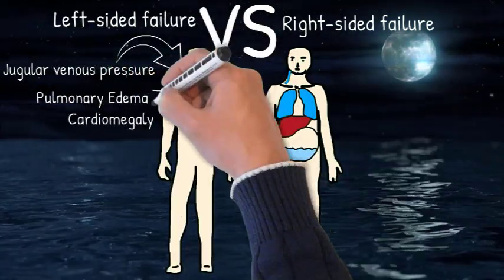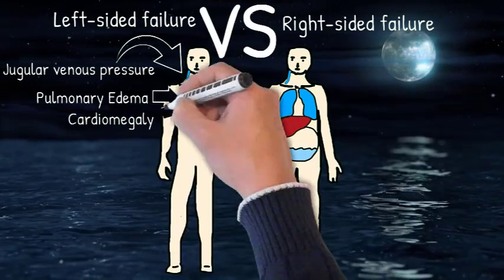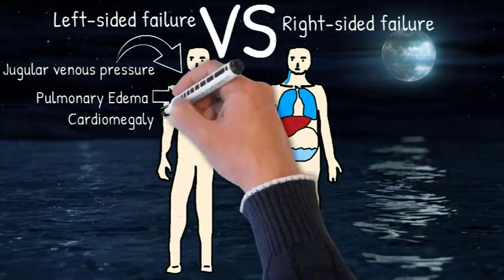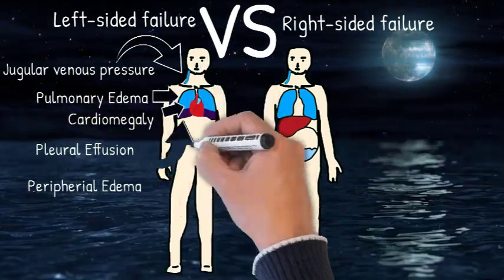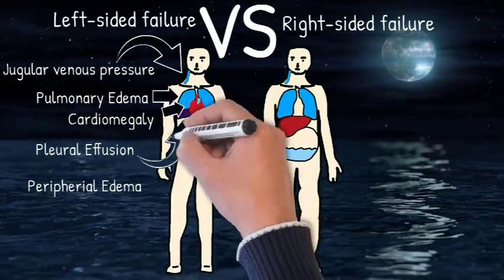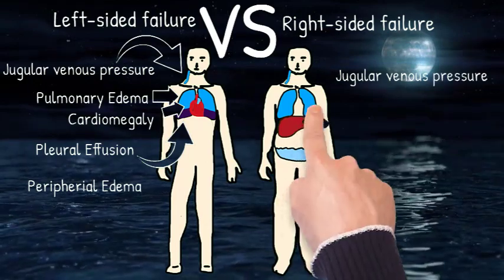In left heart failure, blood backs up into the lungs, causing pulmonary congestion. In right heart failure, blood builds up in the systemic venous system.